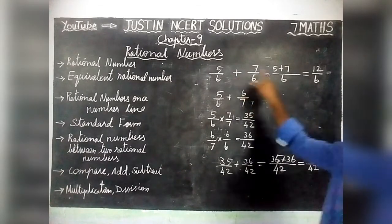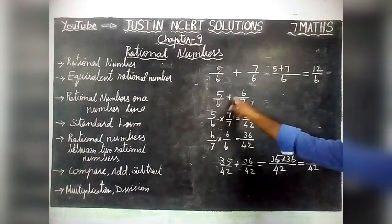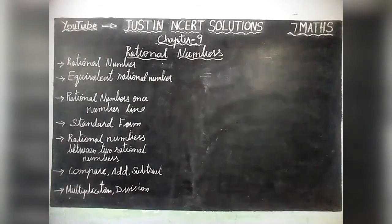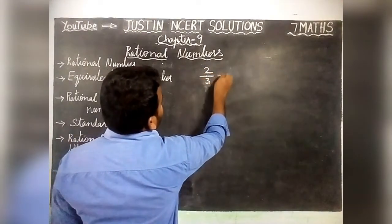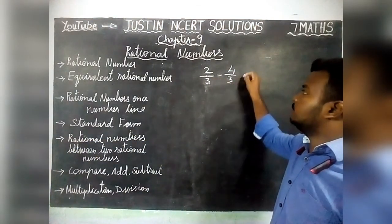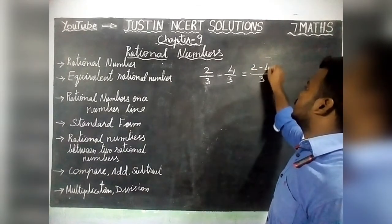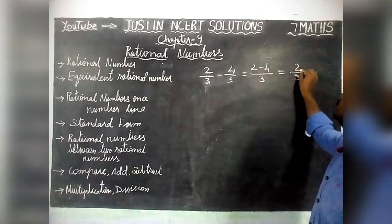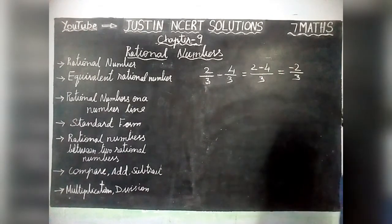So for addition: if the denominators are the same, we can just add. If the denominators are different, we convert to equal denominators, then add. For subtraction, the same concept applies. Take 2 by 3 minus 4 by 3: denominators are the same, so we write common denominator 3 and compute 2 minus 4. Signs are different, difference is 2, and the greatest number 4 has a minus sign in front. So the answer is minus 2 by 3.